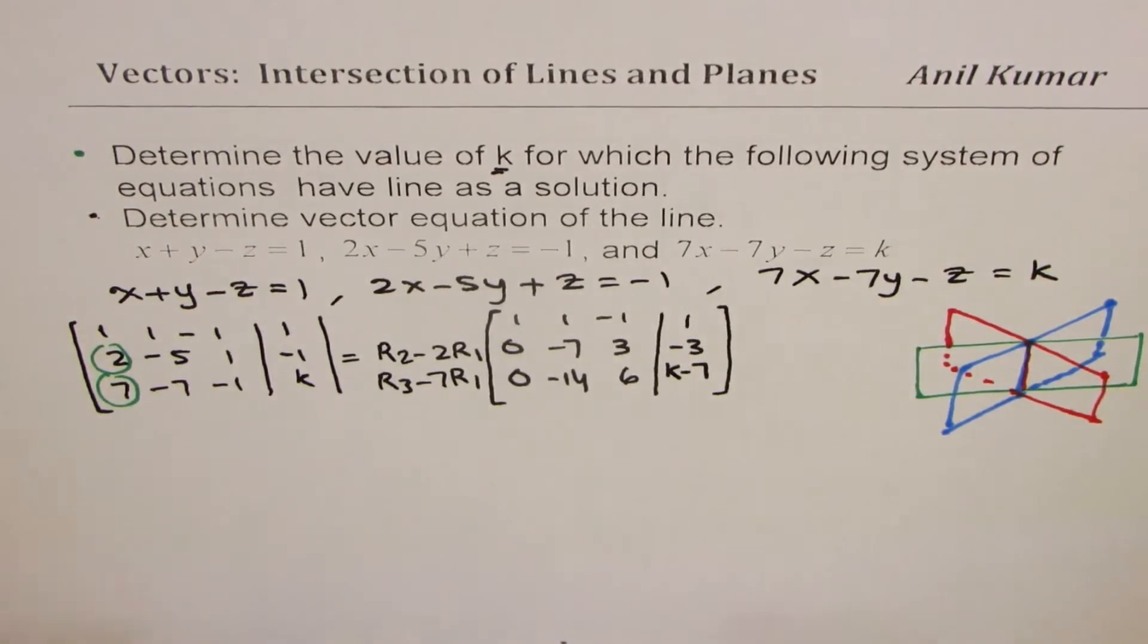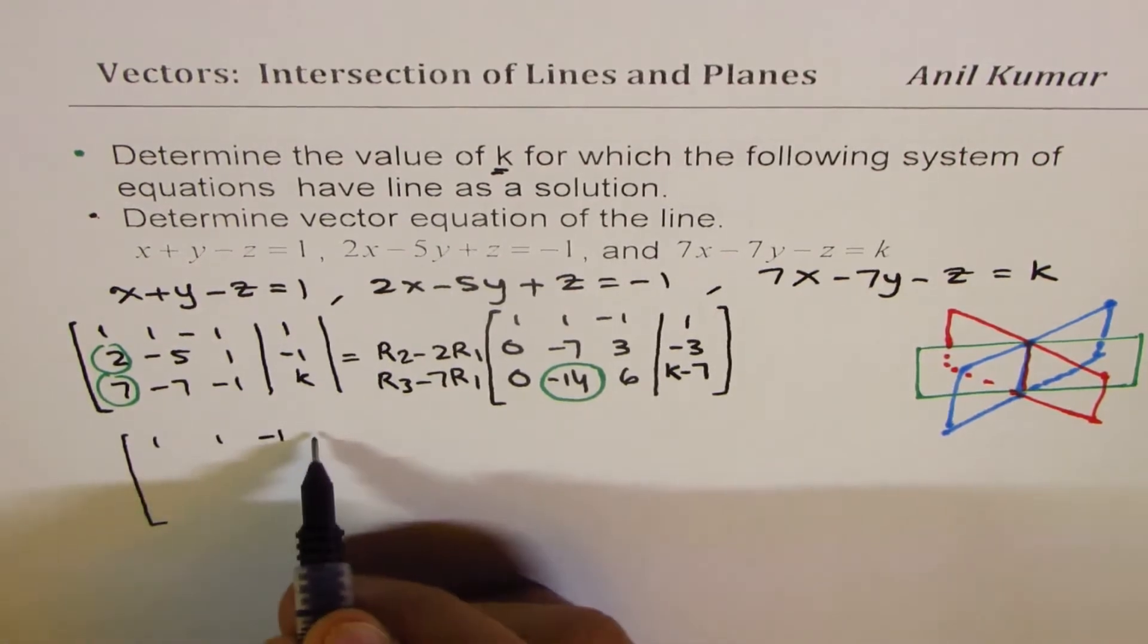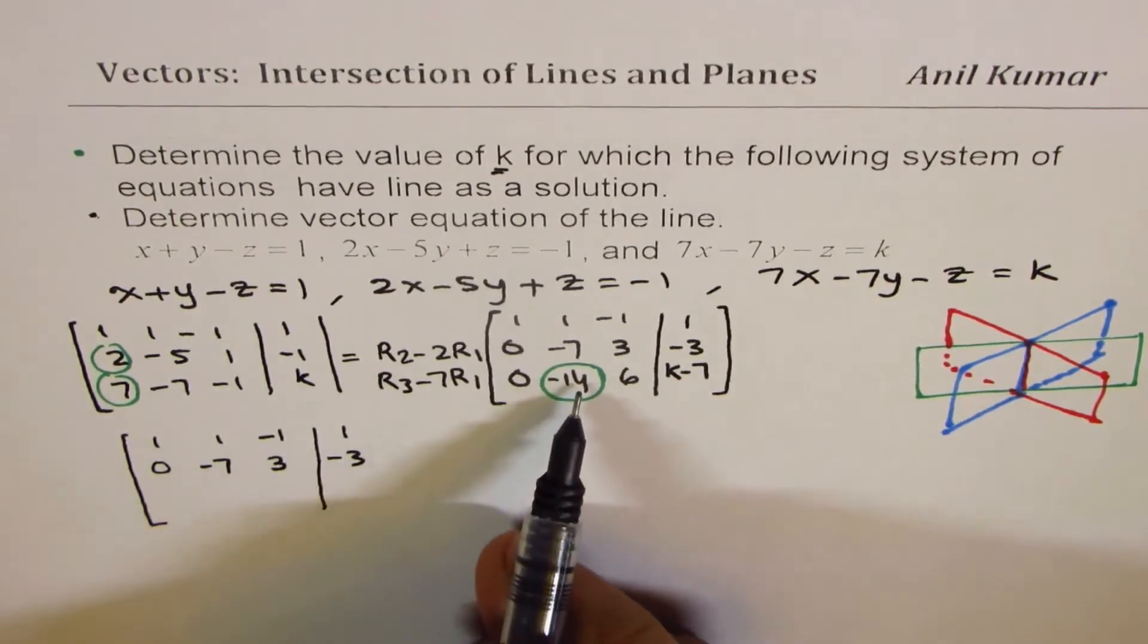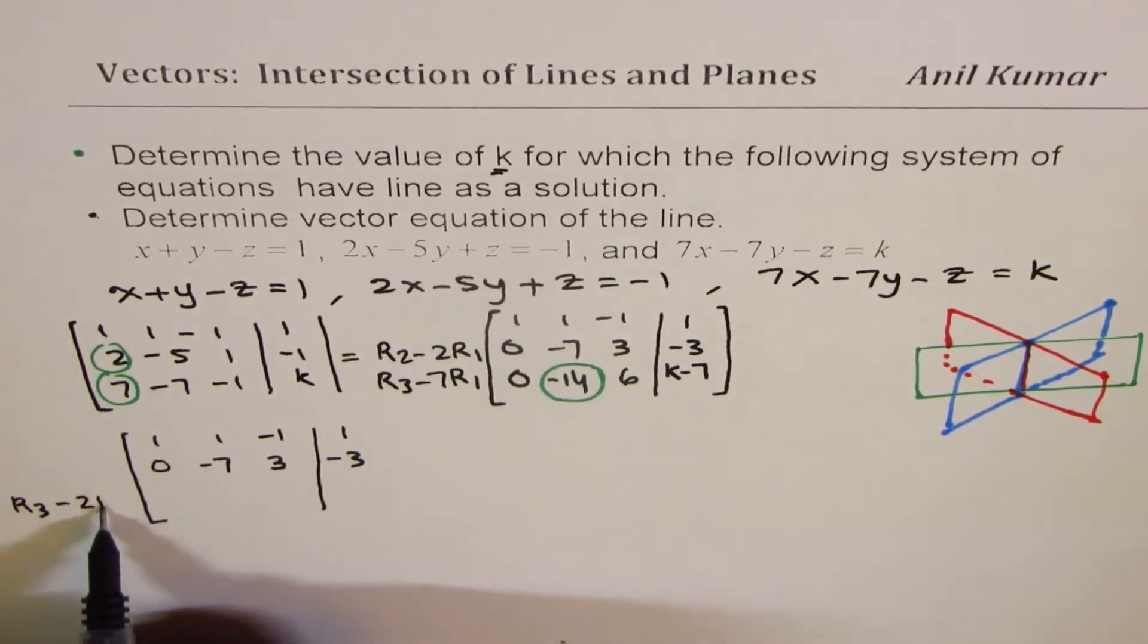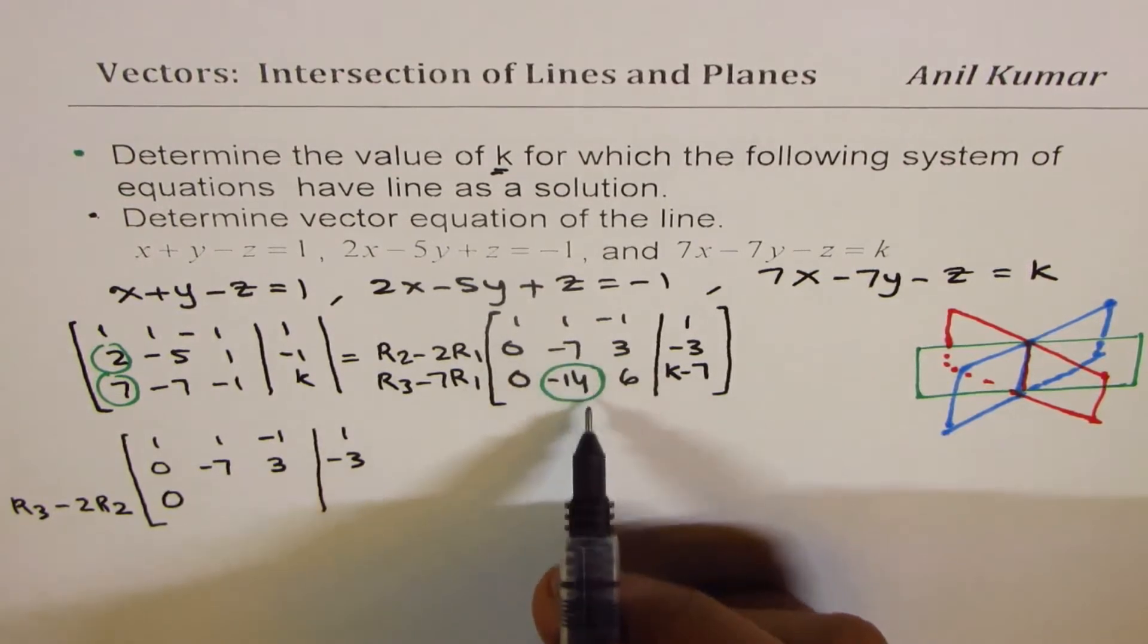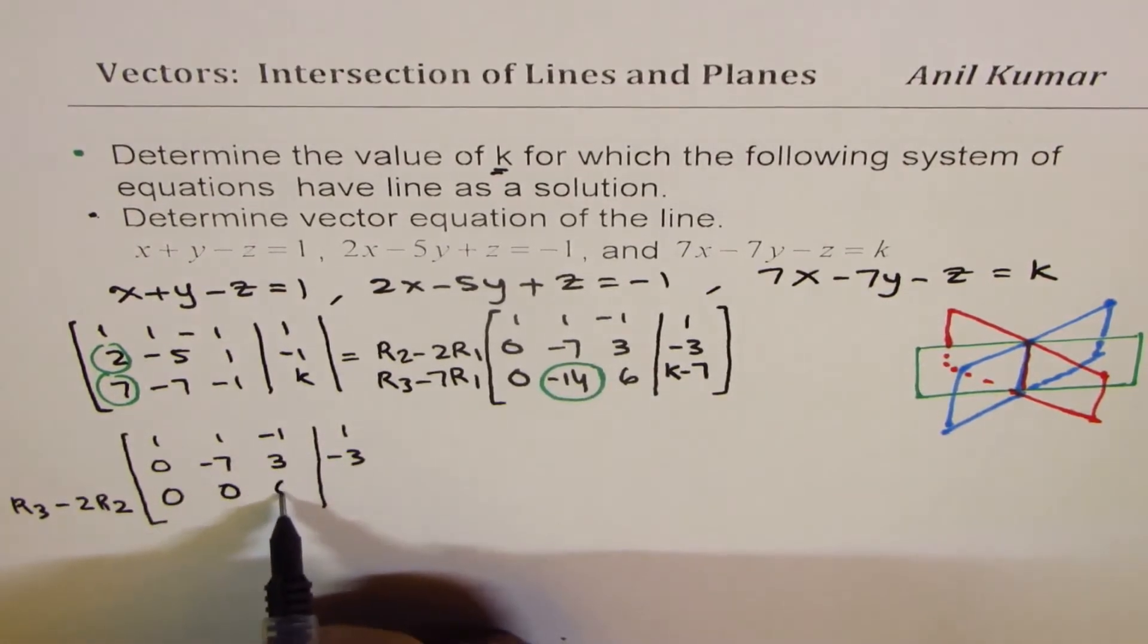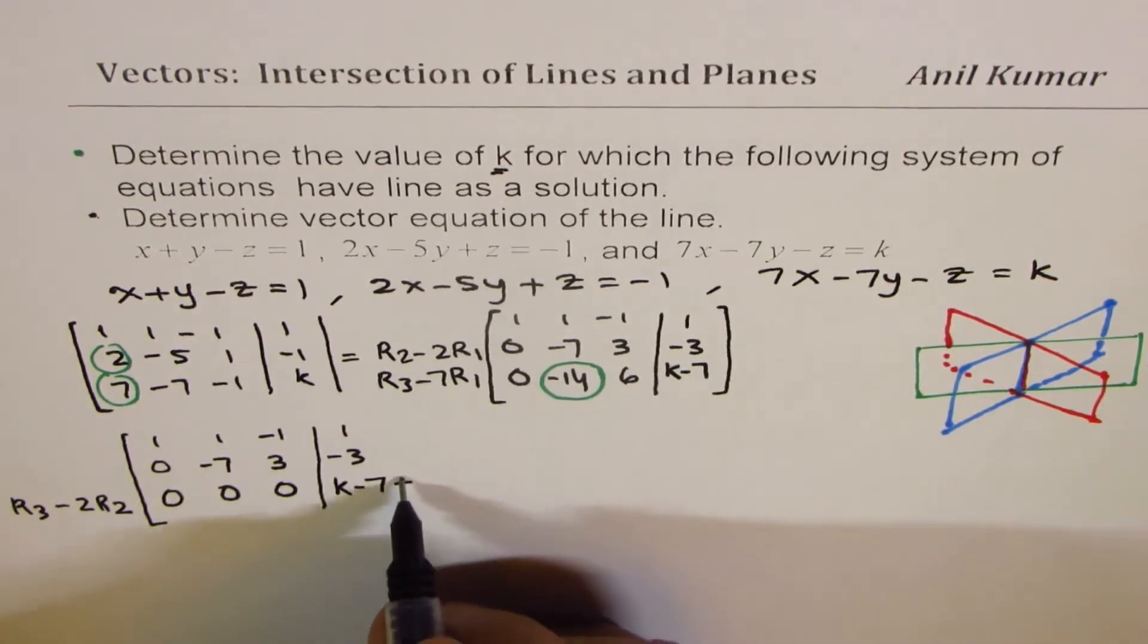Now the idea is that we need to get this value 0. So we need to get this value 0. How can we do so? We'll copy the first two as such, which is 1, 1, minus 1, and 1. The second one, 0, minus 7, 3, minus 3. To get this 0, we will use r3 minus 2 times r2. So this remains 0. 2 times is 14. When you take away, it becomes 0. So minus 2 times is 6. Minus 6 plus 6 is again 0. Here, when we multiply by minus 2, it becomes plus 6. So we get k minus 7 plus 6.